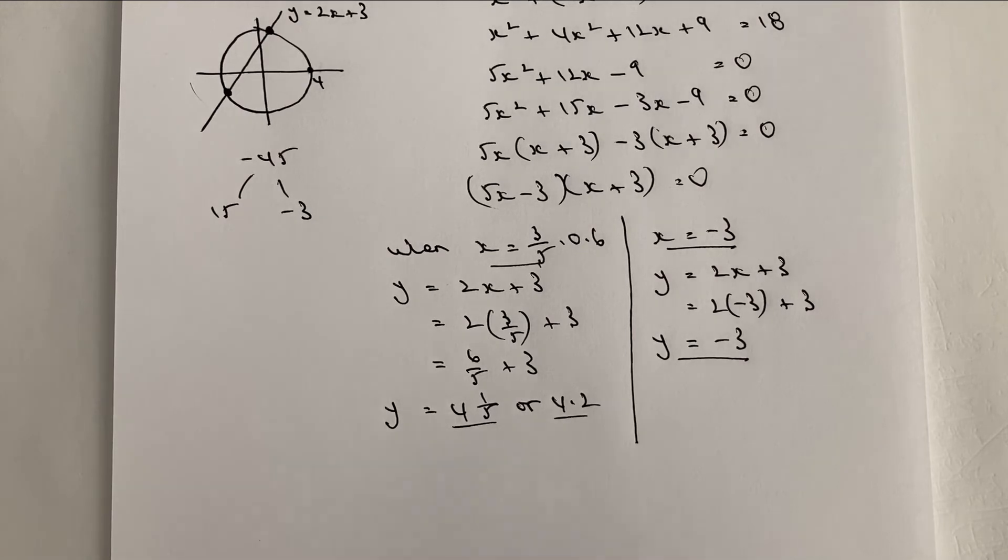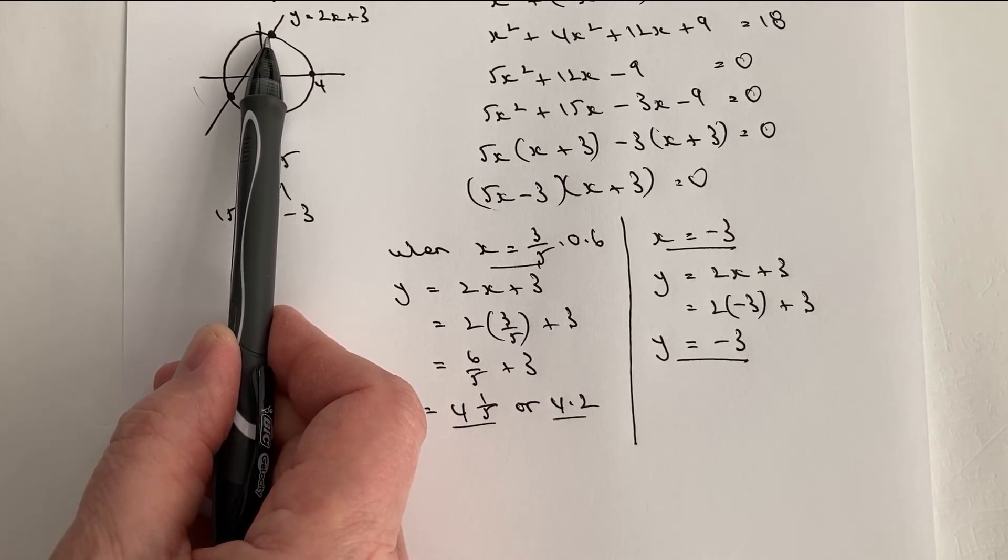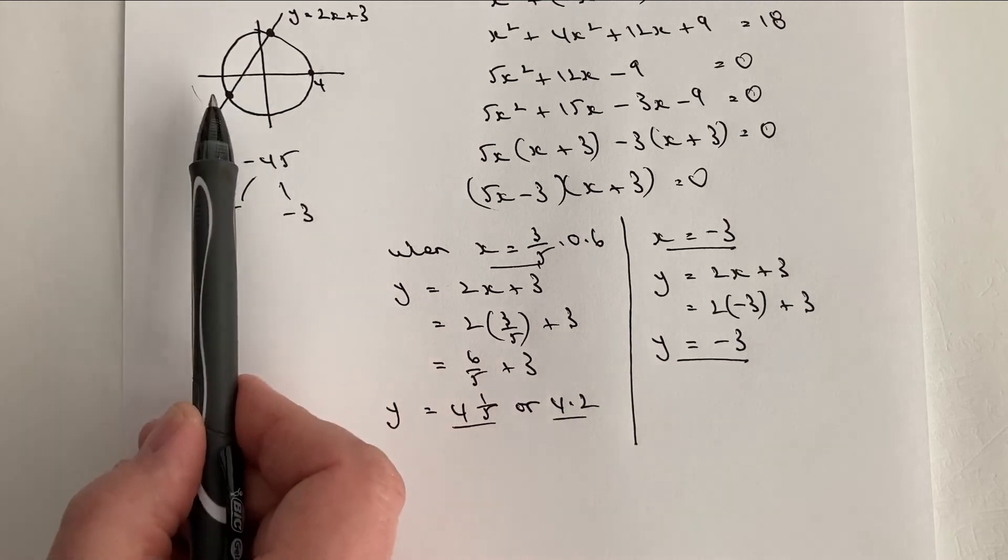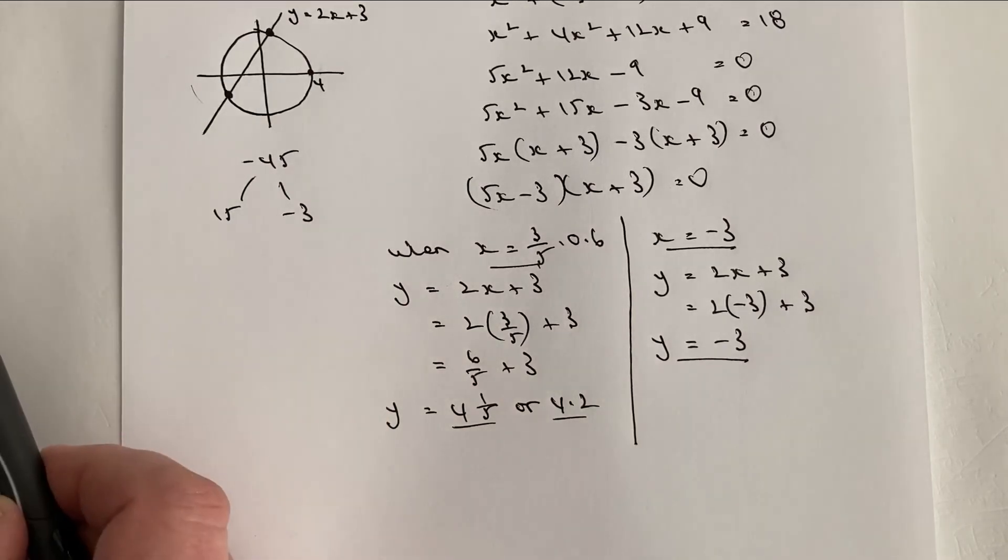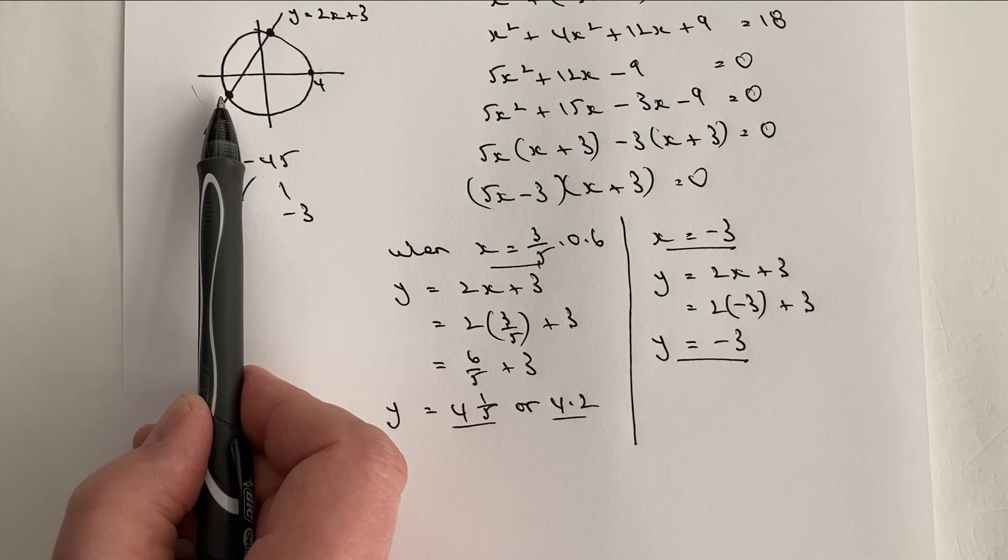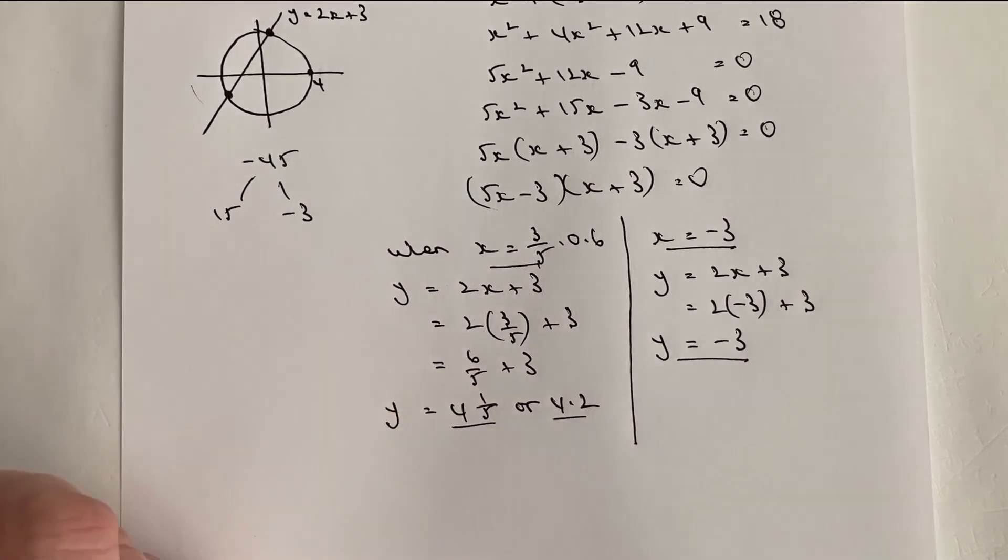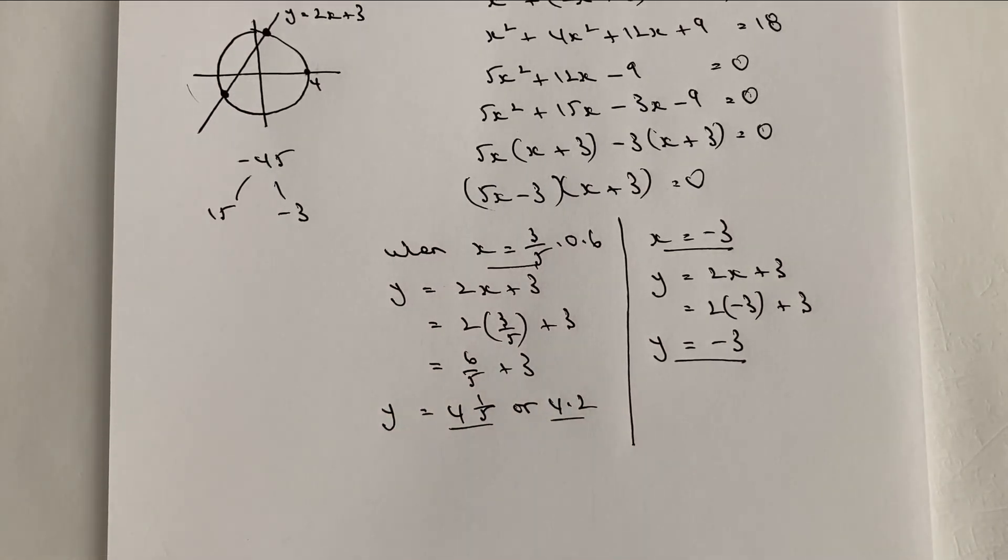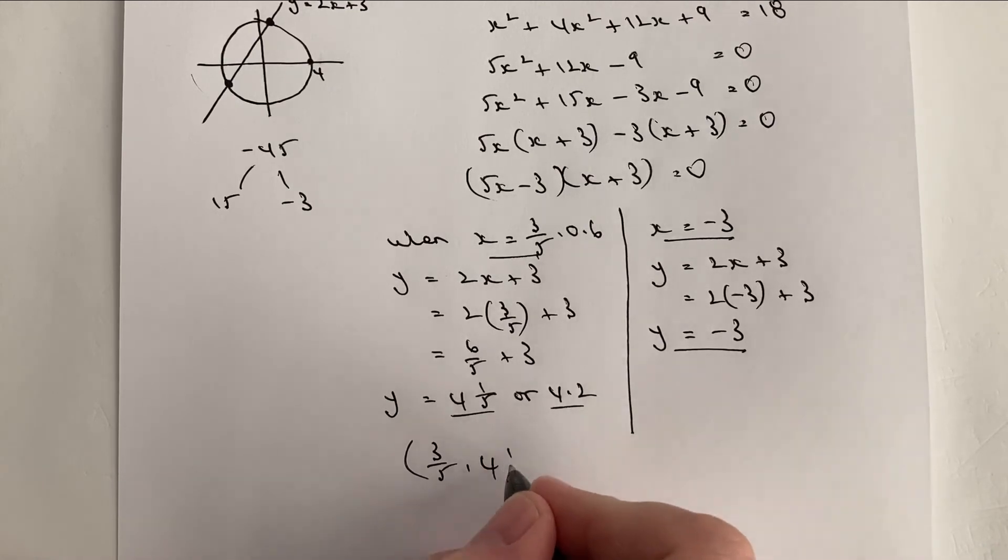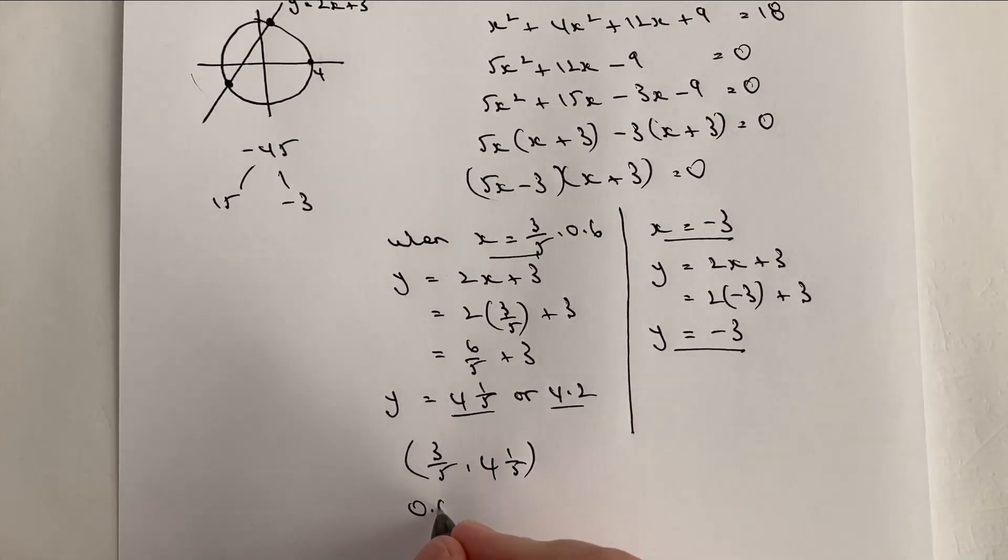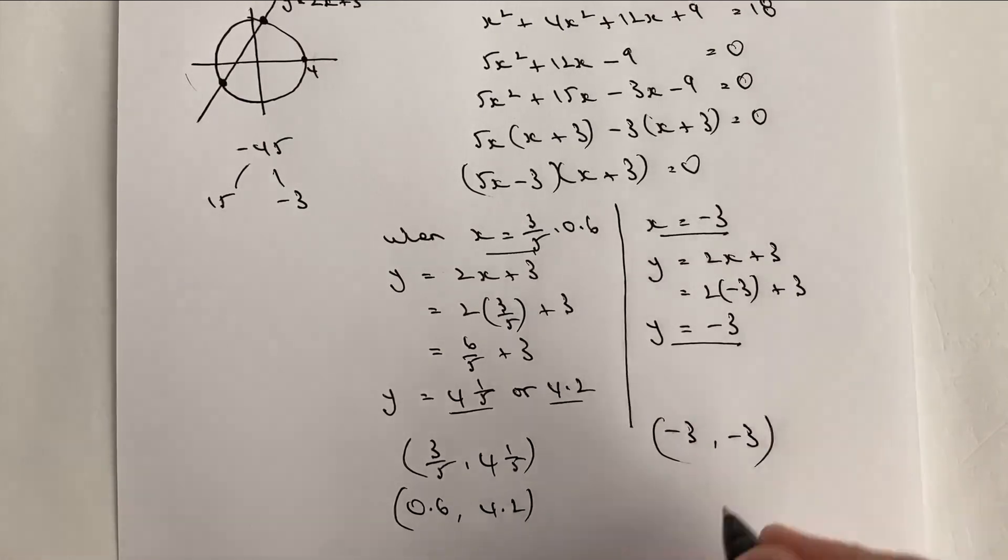So let's have a look at what that looks like on our particular sketch. Well, what it means is that this particular point here is going to be 0.6 and 4.2. So not a bad sketch, 0.6 and 4.2, or if you prefer 3 fifths and 4 and 1 fifth. And this particular point over here, which is not as good, I think my circle's not quite right, but this would be minus 3 minus 3. So just for the sake of clarity, I could write this down as 3 fifths and 4 and 1 fifth, or if you prefer 0.6 and 4.2, and then this one would be minus 3 minus 3.